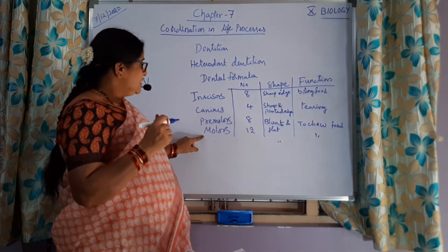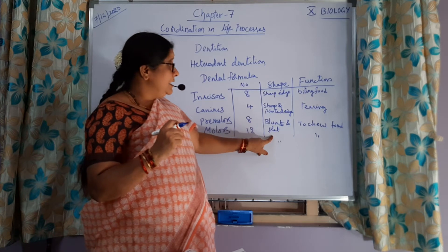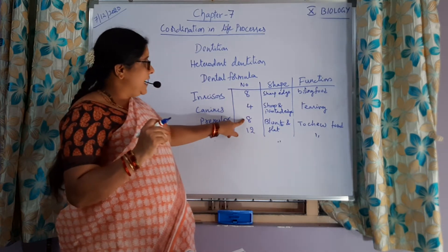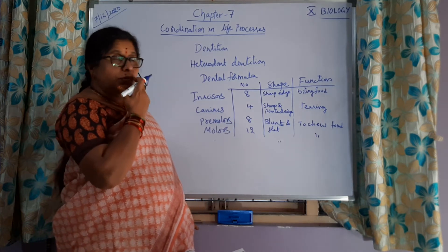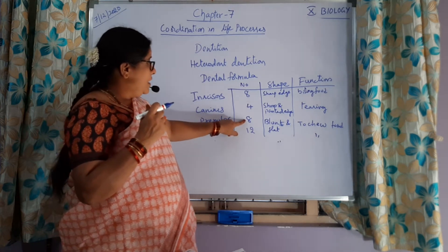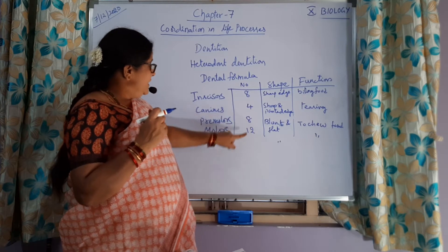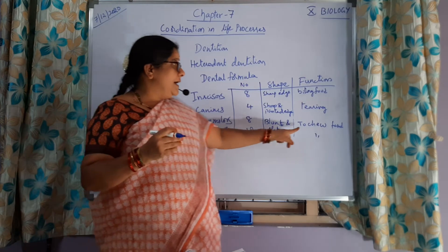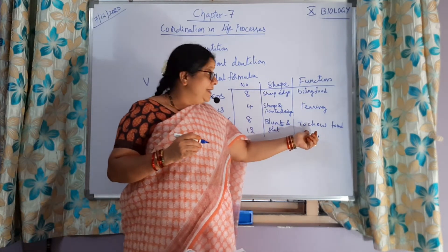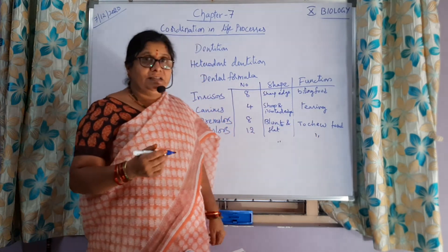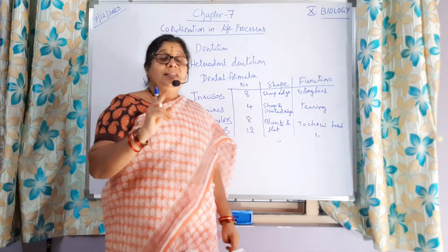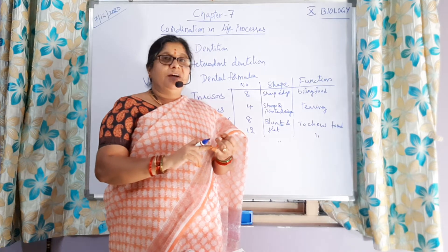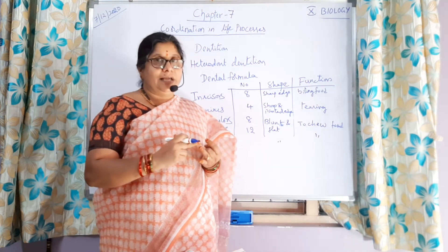Then premolars and molars. Premolars are blunt and have a flat surface; they are eight in number, located next to canines. Molars are at the back of the jaws, twelve in number, and they help in chewing, masticating, and grinding the food. There is a clear relation between the shape of the teeth and the function they perform.